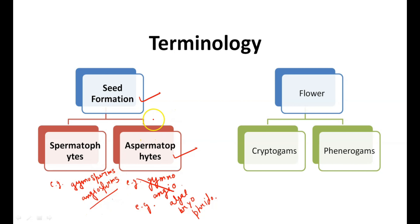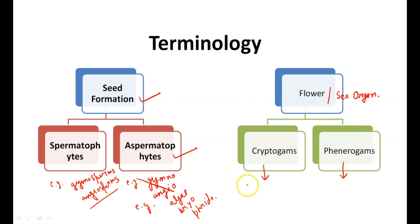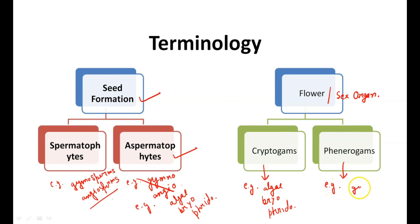Now let's move to the flower, or we can say the sex organ of the plant. Plants having hidden sex organs are known as cryptogams, and plants having showy sex organs are known as phanerogams. Examples of cryptogams are algae, bryophytes, and pteridophytes — all these have hidden sex organs. Examples of phanerogams are gymnosperms and angiosperms, which have showy sex organs.